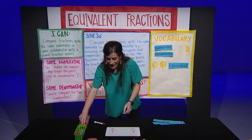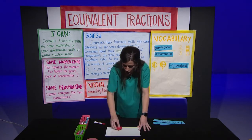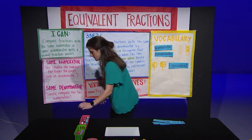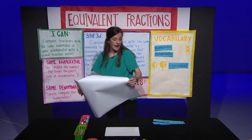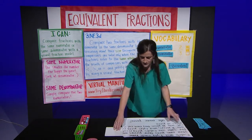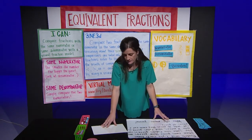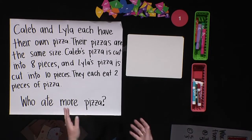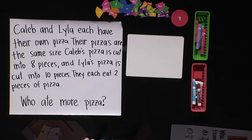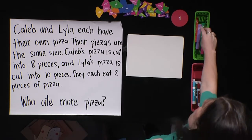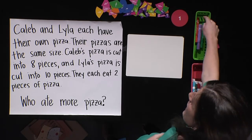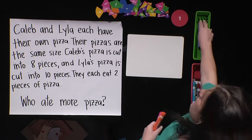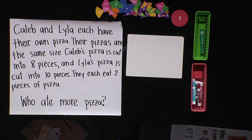Now, what we can do is look at some problems that can be compared. We're going to start with Caleb and Lila eating some pizza. Our question reads: Caleb and Lila each have their own pizza. Their pizzas are the same size. Caleb's pizza is cut into eight pieces, and Lila's pizza is cut into ten pieces. They each eat two pieces of pizza. Who ate more pizza?